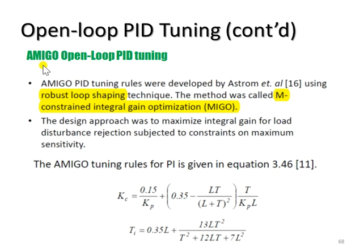Once we already have the FOPDT, from the FOPDT we can extract the value of gain, process gain, time constant, and also time delay.